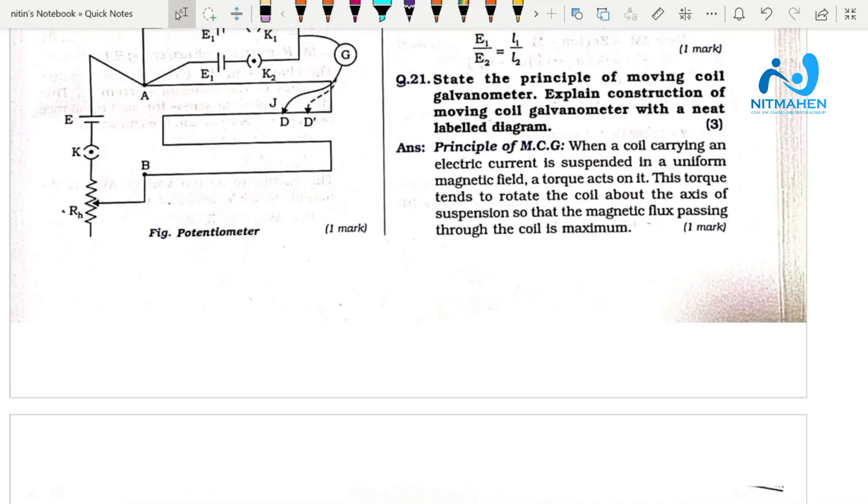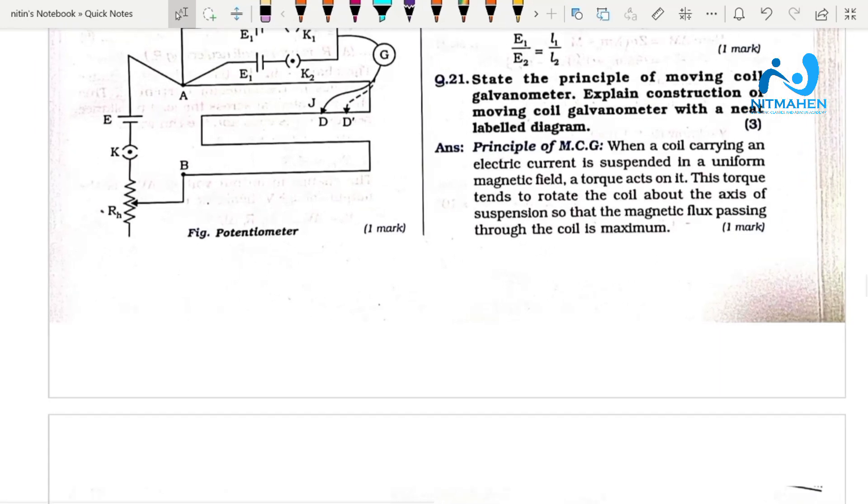Question 21 covers the principle of MCG - moving coil galvanometer. This is an MCG related question.